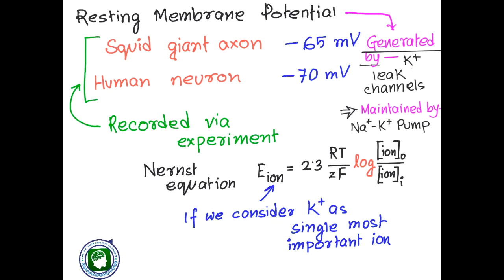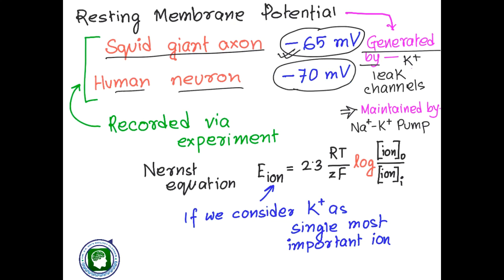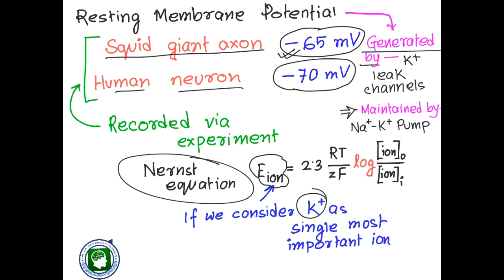When Hodgkin experimentally verified this resting membrane potential in the squid's giant axon, he found that minus 65 millivolt was the resting membrane potential. But in the case of a human neuron, that resting membrane potential is around minus 70 millivolt. But if we calculate the resting membrane potential using the Nernst equation, we have to take into account only one ion because the equilibrium potential is for only one ion.